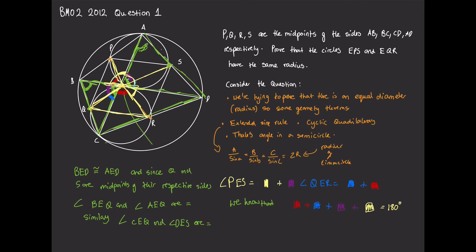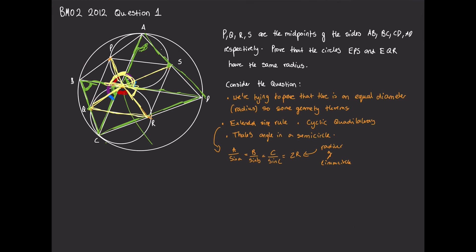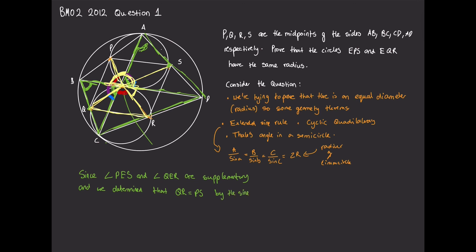With this information it's very clear: angle PES is yellow plus purple, and angle QER is blue plus red, and we know that red + blue + purple + yellow = 180 degrees. So by simple deduction, PES + QER = 180 degrees, which means angles PES and QER are supplementary. The condition we needed for the radii to be equal was that the angles are either supplementary or equal — so we've achieved it.